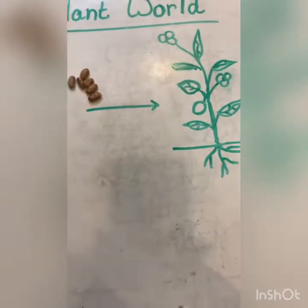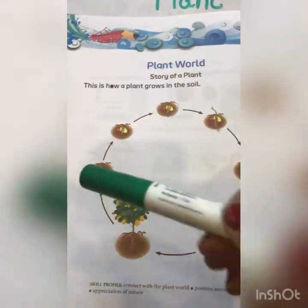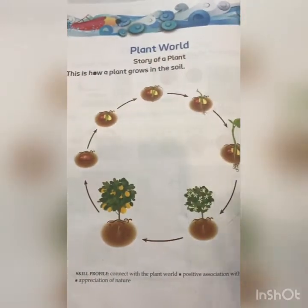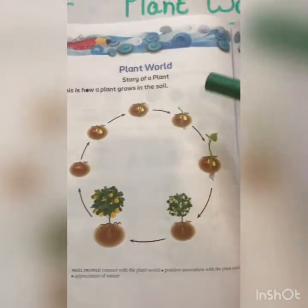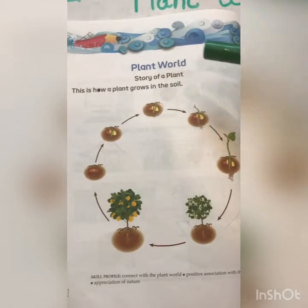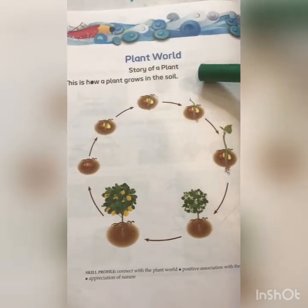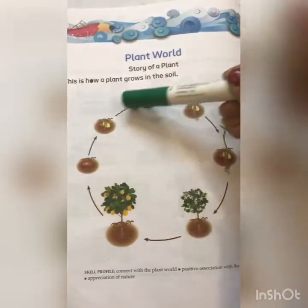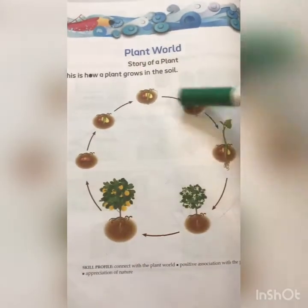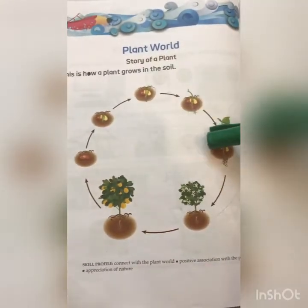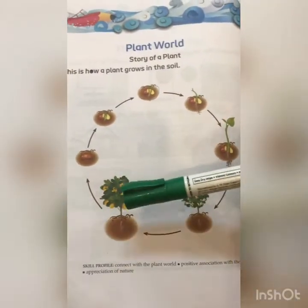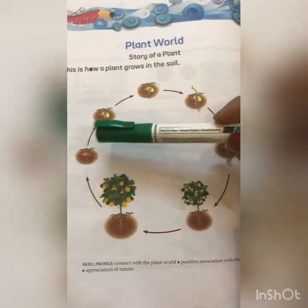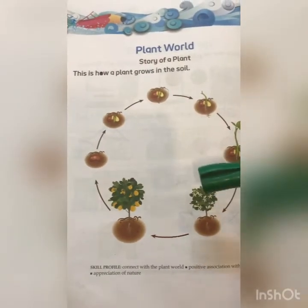Okay kids. So now I will explain you the various stages of a seed growing into a plant. This is on your page number 90 in your general awareness book — the story of a plant. So see kids, the complete cycle is here which shows us how a seed grows into a new plant. I will explain you all the stages one by one.